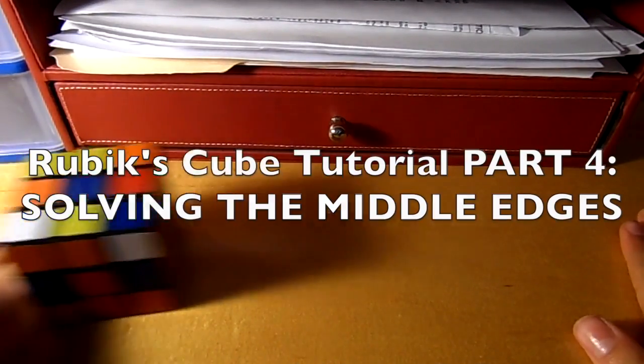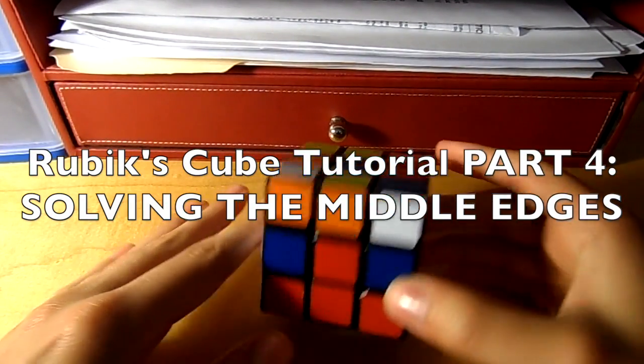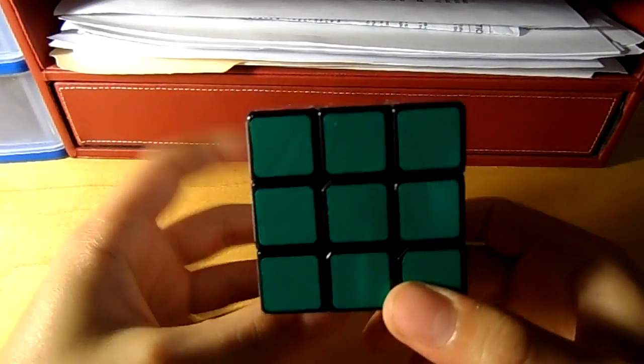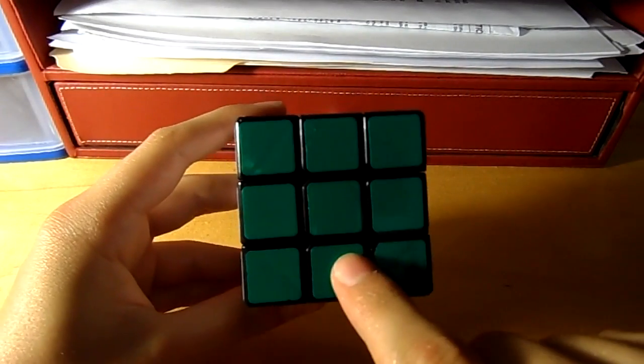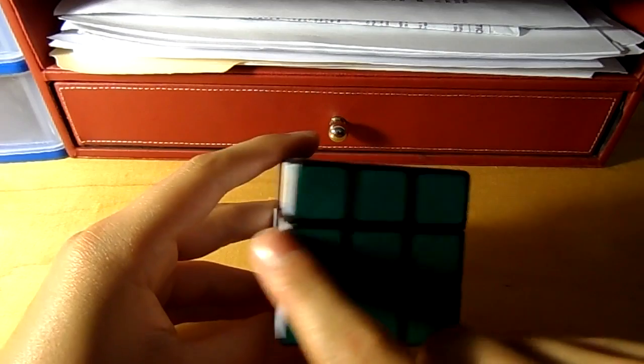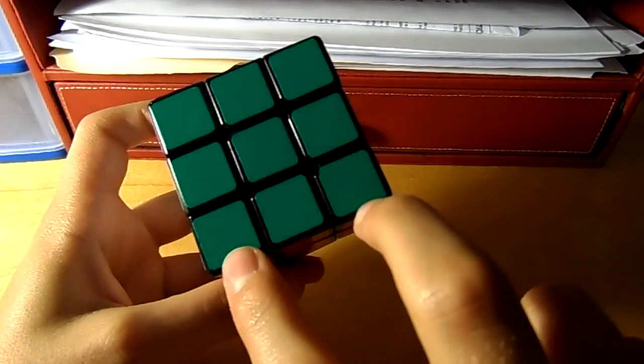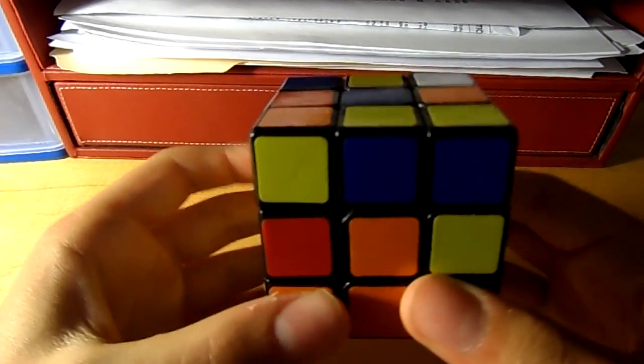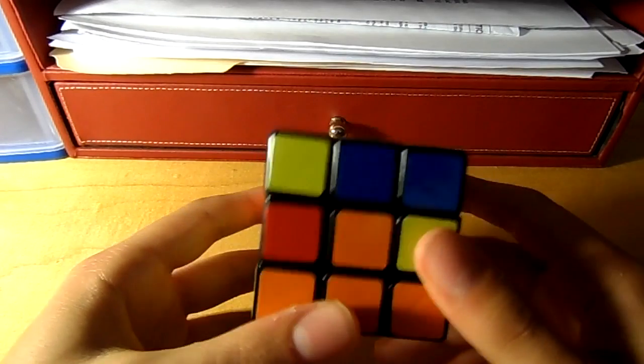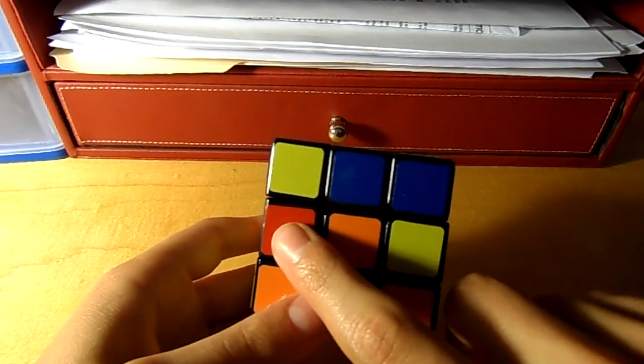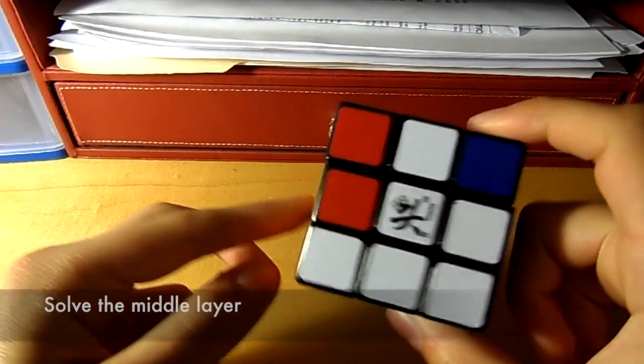All right, welcome to Part 4 in my how to solve a Rubik's Cube tutorial. In the last video you saw how we could solve the first layer by solving the cross and then properly orienting the appropriate corners. Now we're on to the second step in solving the Rubik's Cube, which is going to be solving this middle layer.